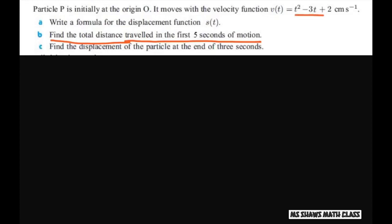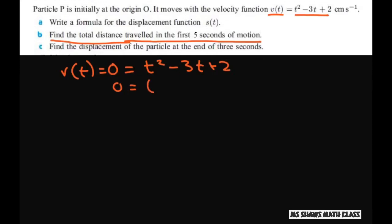For total distance we're going to get positive and negative parts. So we're going to take our velocity v(t) and set it to 0. So 0 equals t squared minus 3t plus 2, which factors as 0 equals (t minus 2)(t minus 1). So we're going to do a sign diagram, and remember we're going from 0 to 5.